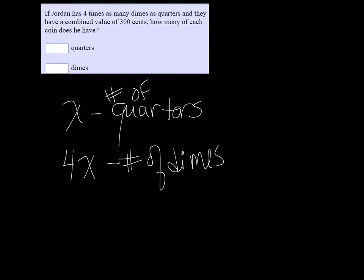And we know how much each one has a value, so quarters are worth 25 cents. So if you take 25 cents times the number of quarters you have, and you add that to 10 cents or 0.10 times the number of dimes you have, then in the end you need to have 390 cents.